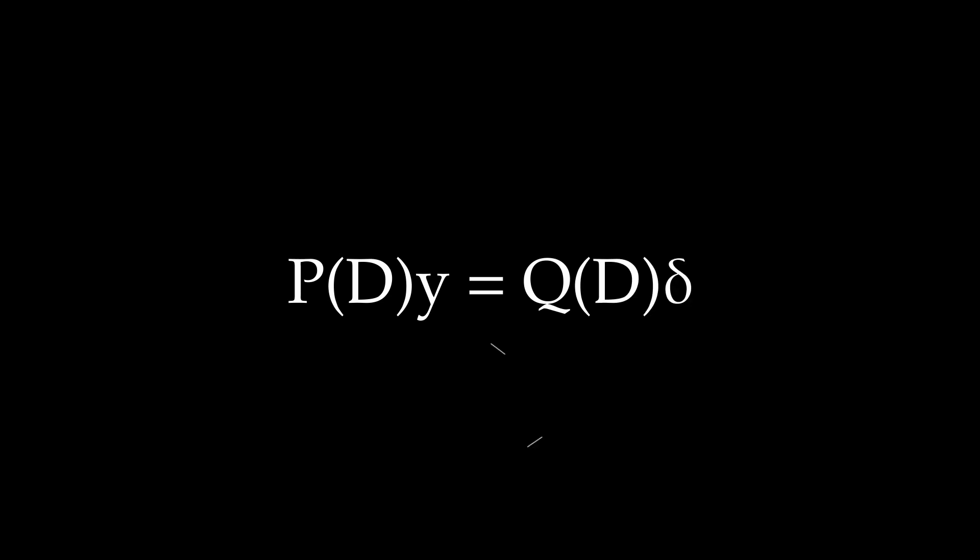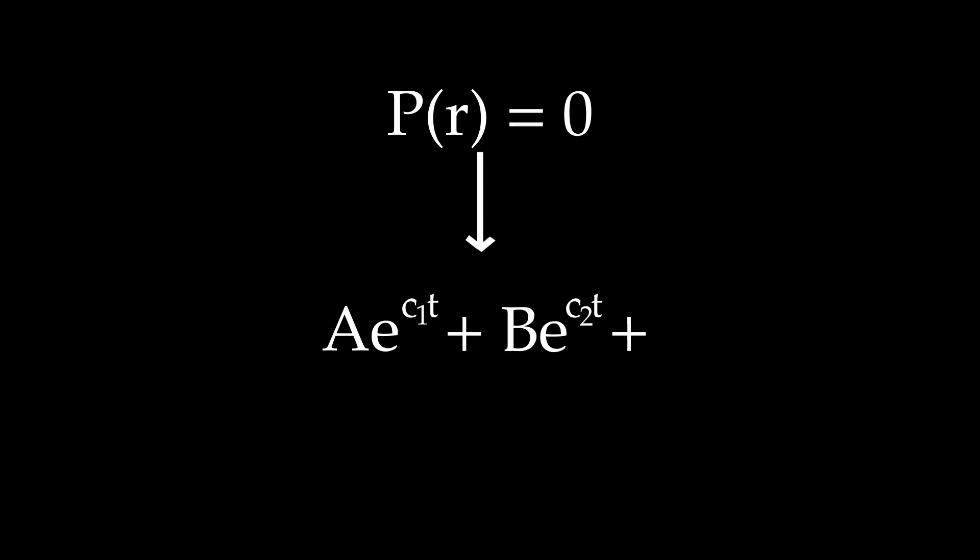equals q of d delta. Where d represents a derivative, p and q are some linear time invariant operators. We have yet to use the property of time invariance. So in general, we need to solve p of r equals 0, to get some exponentials just as we did before. And then we use integrals to find the weights.